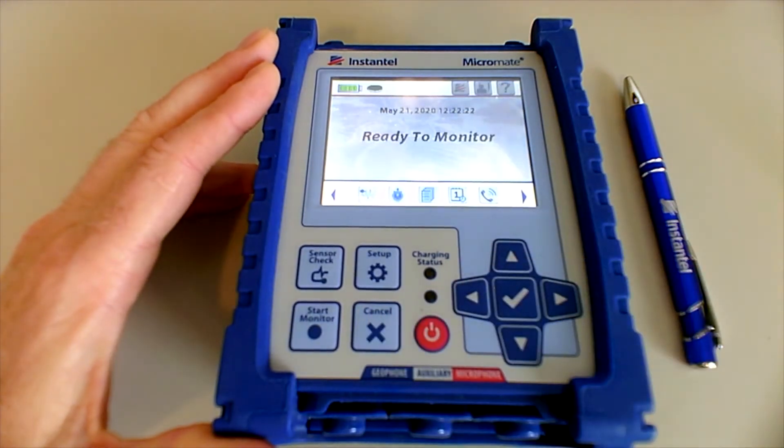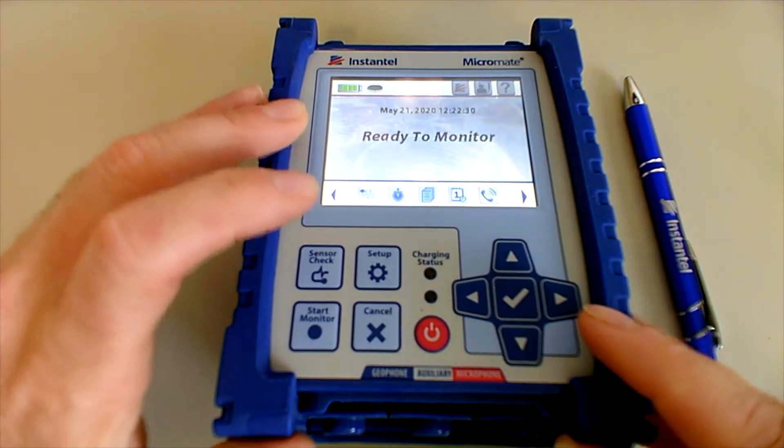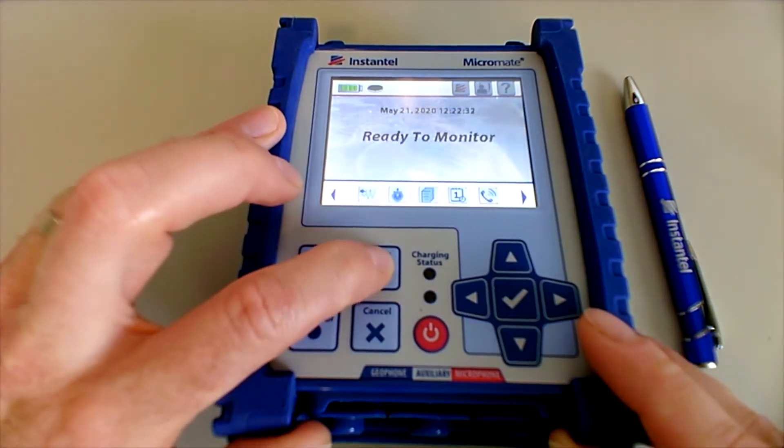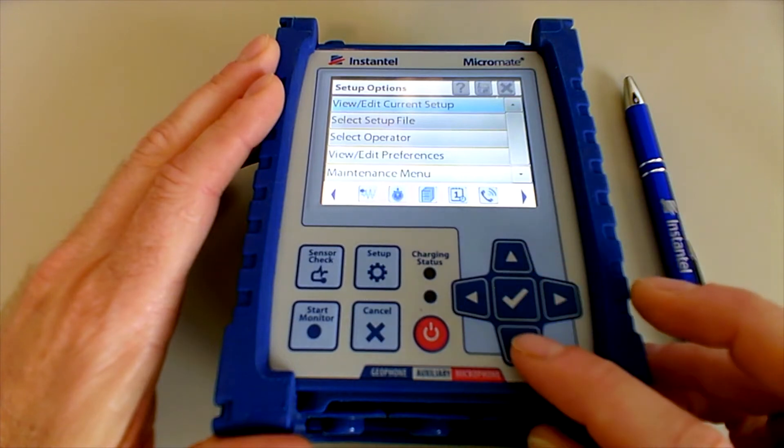You want to begin at the home screen, so you reach the home screen from whatever screen you're on by pressing the cancel button. You'll want to press the setup button, and then here you've got your list of setup options.